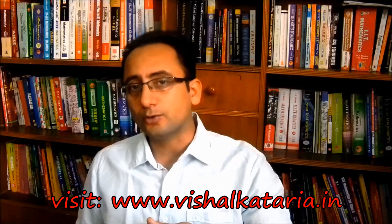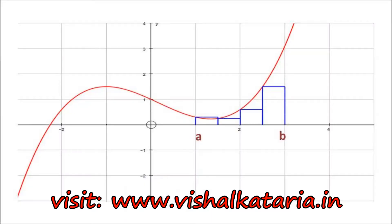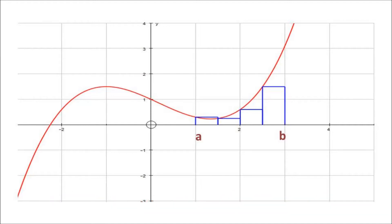Let's see how we can find the area under the given curve. The region under the curve from point x equals a to point x equals b — let me divide this region into different rectangles. If you observe carefully, the sum of areas of these rectangles is less than the area under the curve from point x equals a to point x equals b.